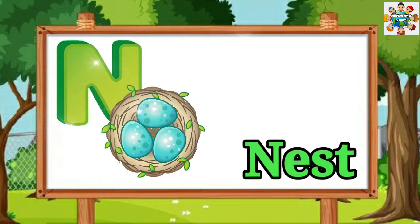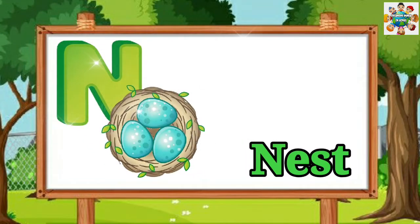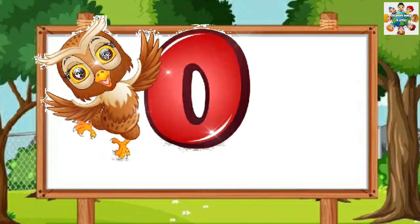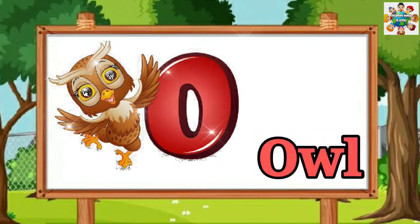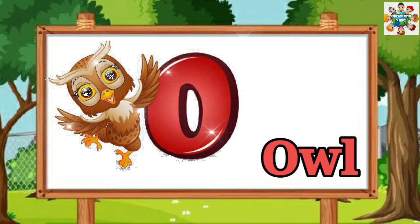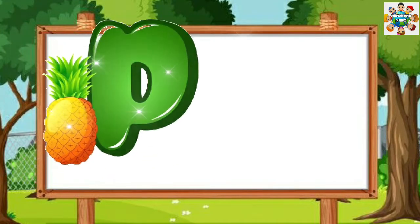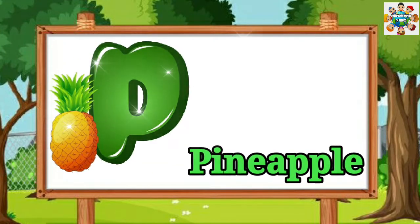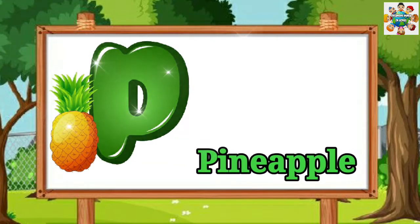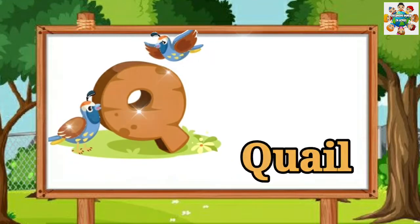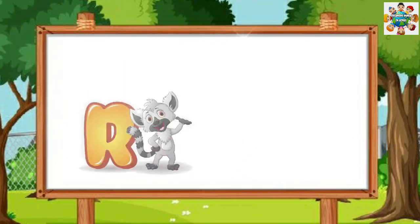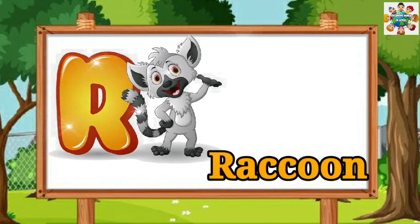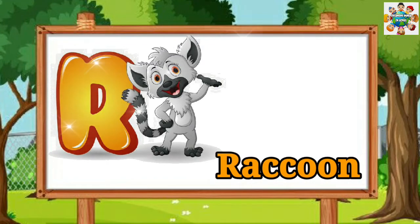N is for Nest. O is for Owl. P is for Pineapple. Q is for Quail. R is for Racoon.